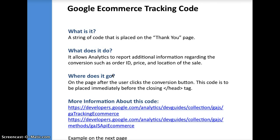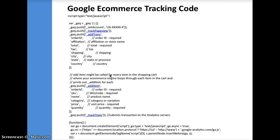The last one is the Google e-commerce tracking code. This is a string of code placed on the thank you page, just like the AdWords tracking. What it does is it allows Analytics to report on additional information regarding the conversion, such as order ID, price, location of the sale, and many other things. It goes on the page after the user clicks the conversion button, and the code is placed immediately before the closing head tag. There are some links provided that are useful for finding more information about Google e-commerce tracking.